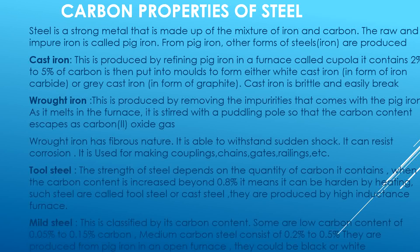Next, we look at the carbon properties of steel. Steel is a very strong metal made up of a mixture of iron and carbon. The raw and impure iron is called pig iron. From pig iron, other forms of iron are produced. Cast iron is produced by refining pig iron in a furnace called a cupola. It contains two percent to five percent carbon and is put into moulds to form either white cast iron, in the form of iron carbide, or grey cast iron in the form of graphite. Cast iron is brittle and easily breaks.